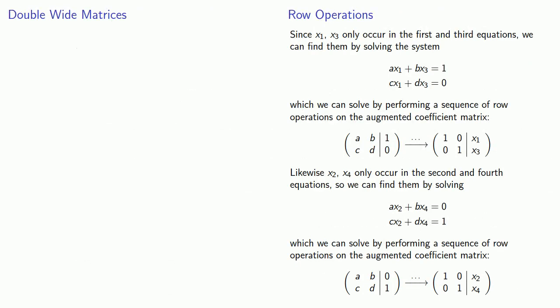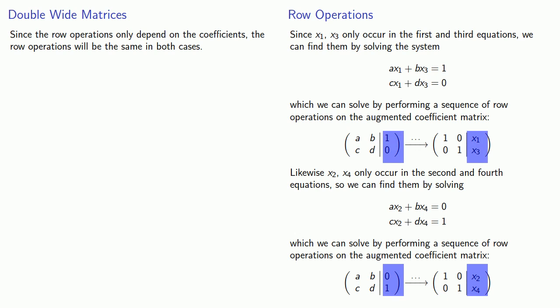But it's important to remember that the row operations only depend on the coefficients. So whatever row operations we need to solve for x1 and x3, we need to apply these same row operations to solve for x2 and x4. In fact, the only difference between the two of them is going to be what happens to the constant terms. So what we can do is perform whatever row operations we need on a doubly augmented coefficient matrix.